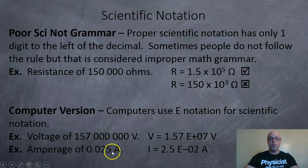Amperage, 0.025 amps. So in that case here, I'm just going to move the decimal over two places to the right. And so that's 2.5 times 10 to the negative 2, or E negative 2 amps.